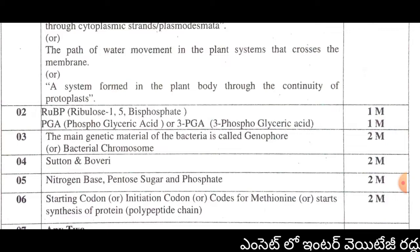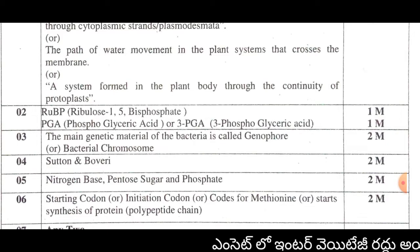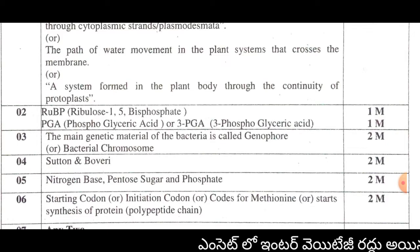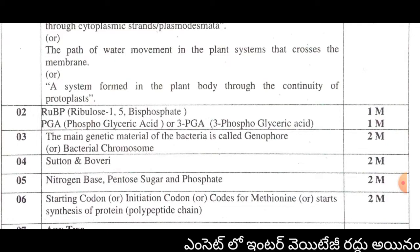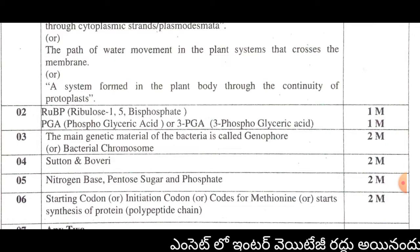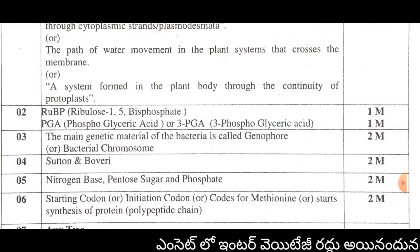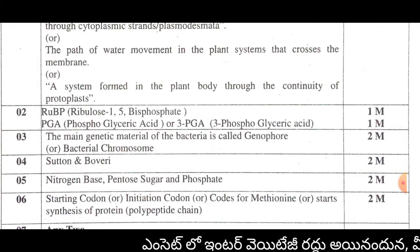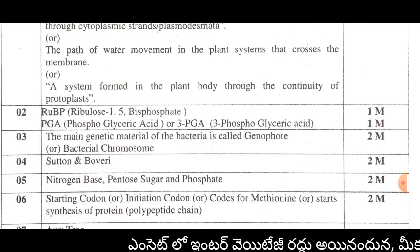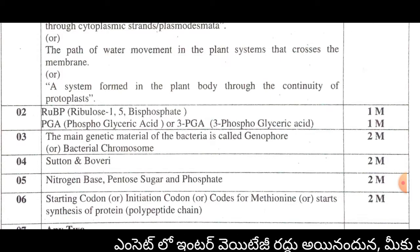The third question asks about the Genophore. The main genetic material present in the bacterium cell is called the Genophore. The bacterium chromosome answer also gives 2 marks.